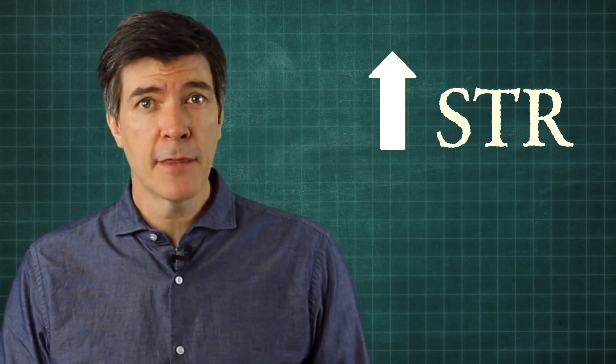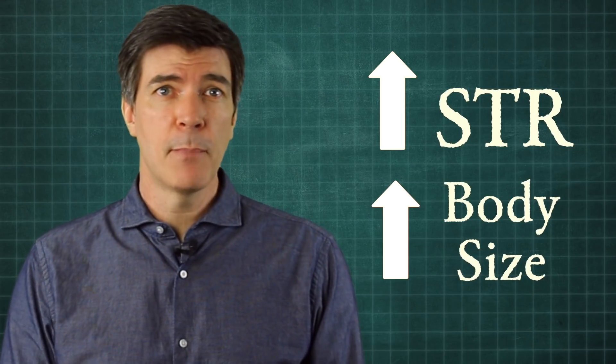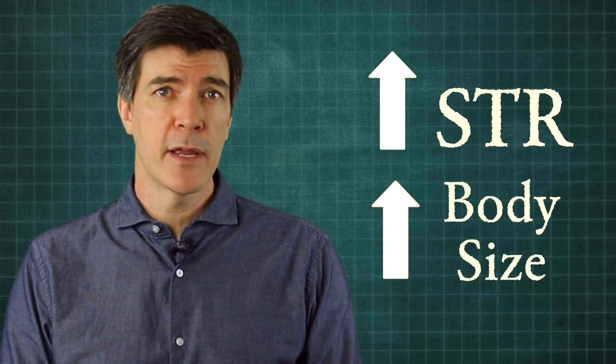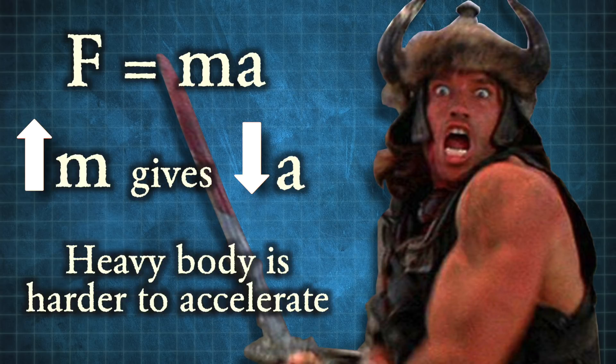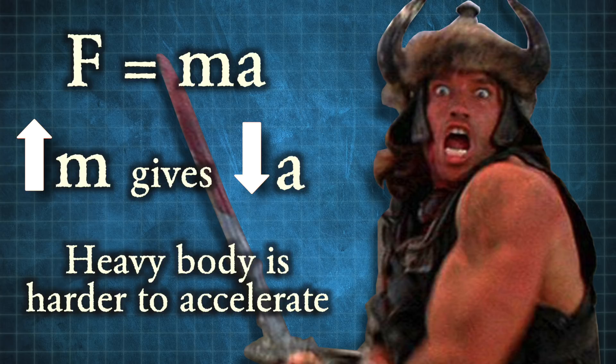There are however a couple of big things to consider with this thought experiment. First of all, an increase in strength usually entails some increase in body size, cross sectional area in particular. So looking at the F equals MA equation, the heavier body would eat up some of that strength related acceleration.